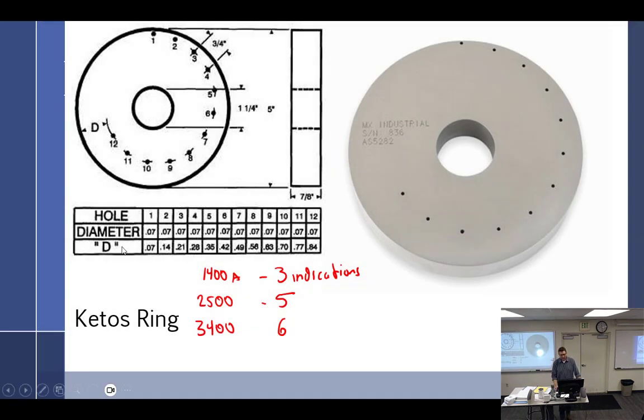So for those of you who don't know what a Ketos ring is, which would be group three, this is a Ketos ring. And we're going to use it in the Magniflux machine, which is a misnomer, but I'll say it anyway. And these are holes that are drilled into it at varying depths. Here's the depths that they go into. And you are supposed to pick up up to six indications at 3400 amps DC. One, two, three, four, five, six, right there. That would be .42 of an inch down.